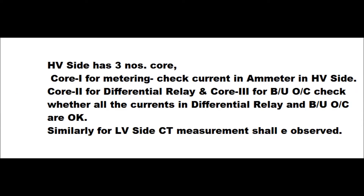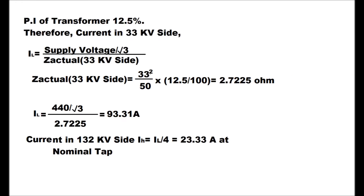For the stability test, the HV site CT has three cores. Core 1 is taken for metering — check all ammeter currents on the panel side. Core 2 is taken for the differential relay and Core 3 for backup overcurrent — check all currents in the differential relay and backup overcurrent. Similarly, LV site CT measurements are taken in the ammeter and backup overcurrent and differential relay.